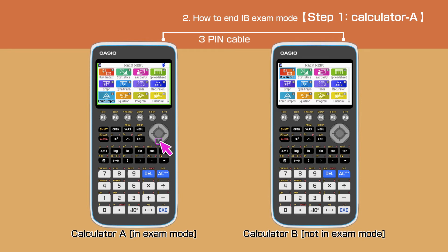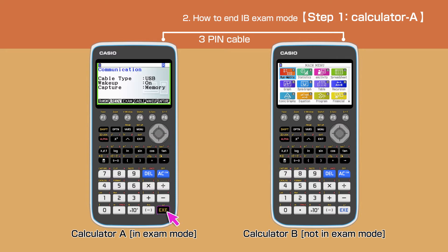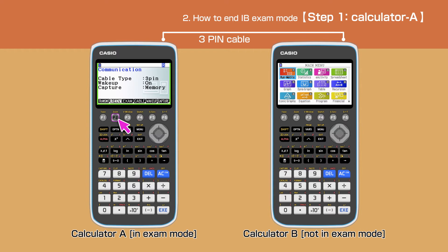On the calculator that is in exam mode, choose the link function. Press F4, followed by F2 to select 3-pin. Press F2 to receive. The display will show the message: receiving.